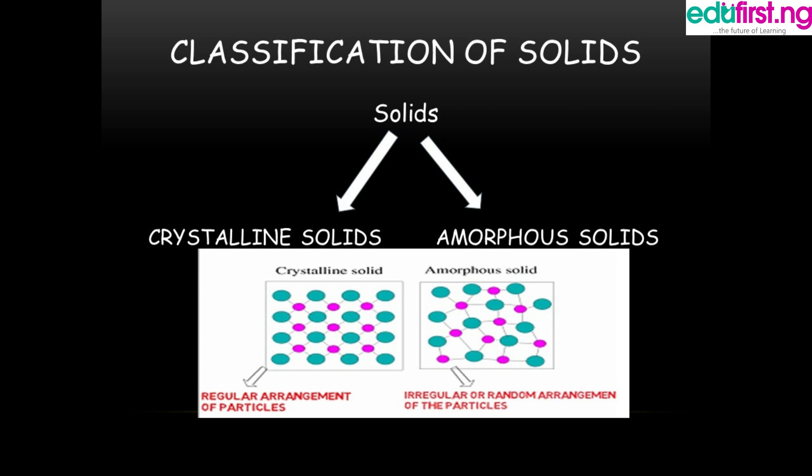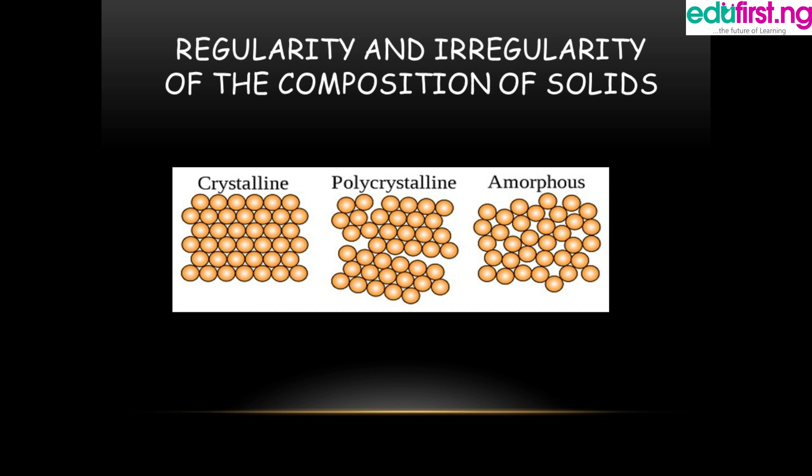Classification of solids: solids are classified into crystalline solids and amorphous solids, as shown in the diagram. Crystalline solids have a regular arrangement of particles, while amorphous solids have an irregular or random arrangement of particles. In crystalline solids the molecules are compacted with no space, while polycrystalline solids are part crystalline but exhibiting amorphous characteristics that are dispersed.